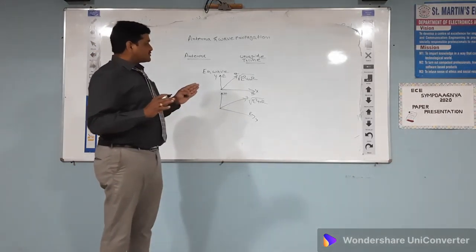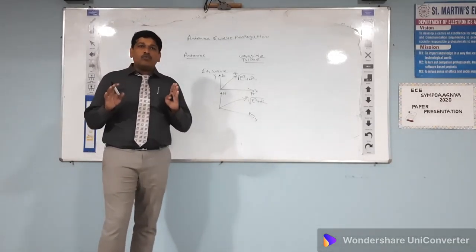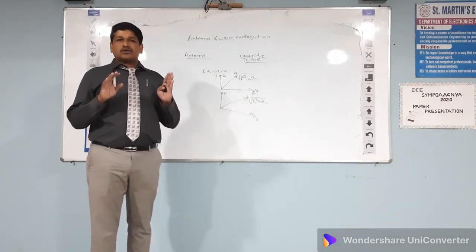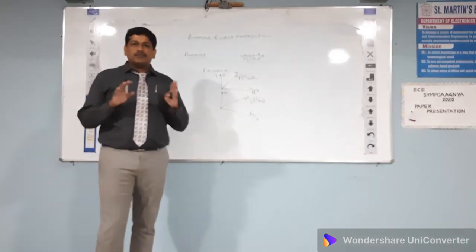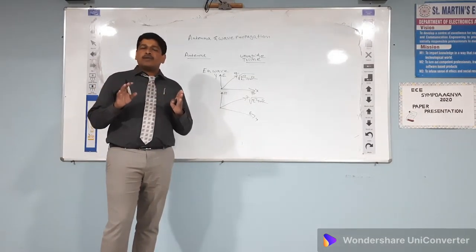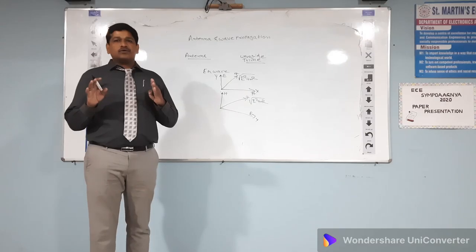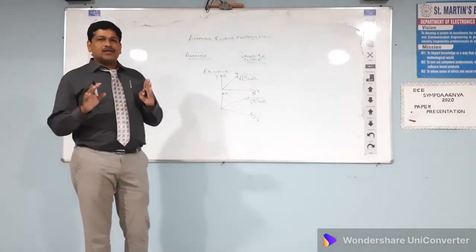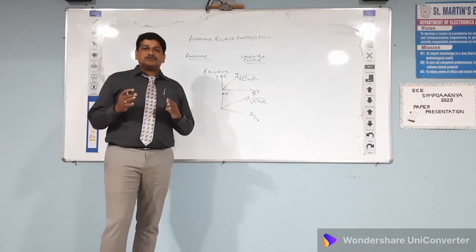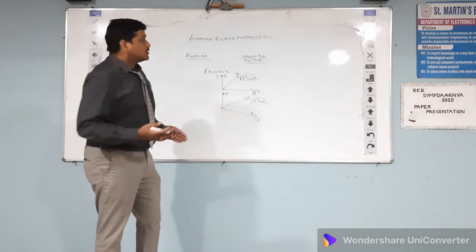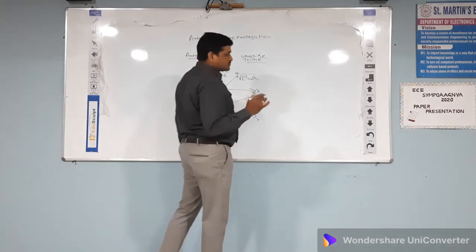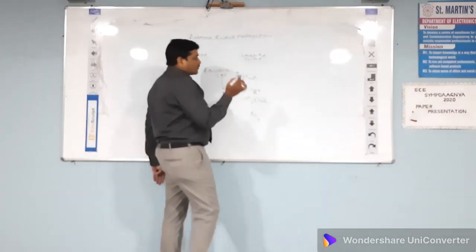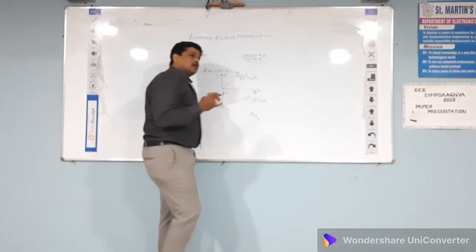When there is no acceleration, when there is no movement of the current — that means if the current is completely uniform along that particular medium — electromagnetic waves cannot propagate. Electromagnetic waves will propagate when there is a fluctuation in the charge, that means some oscillation should be generated. When there is oscillation generated because of that fluctuation in the charge, the electromagnetic waves can be propagated.